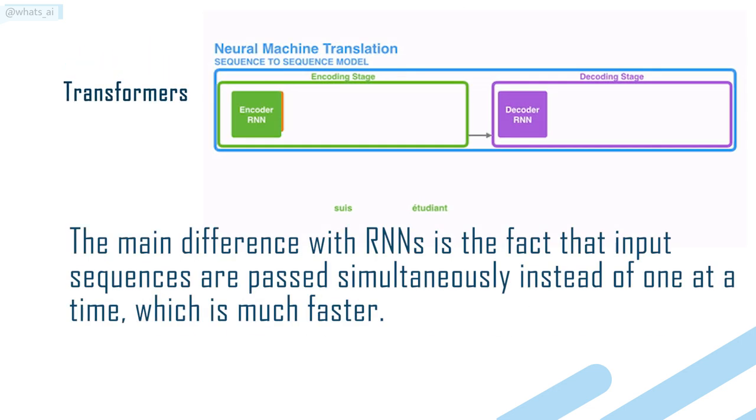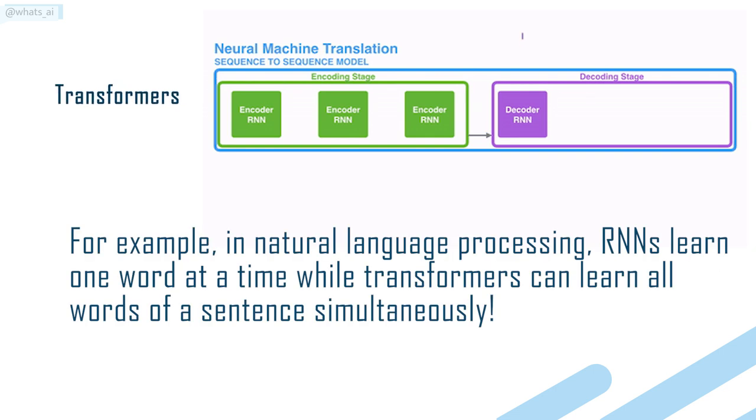The main difference with RNNs is the fact that input sequences are passed simultaneously, instead of one at a time, which is much faster. For example, in natural language processing, RNNs learn one word at a time, while transformers can learn all words of a sentence simultaneously.